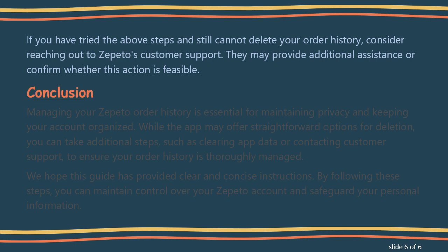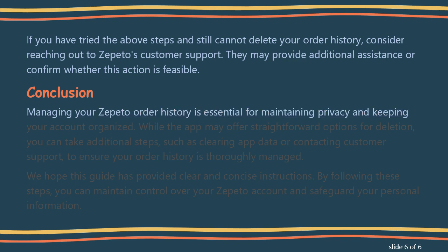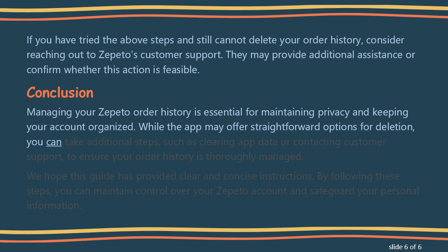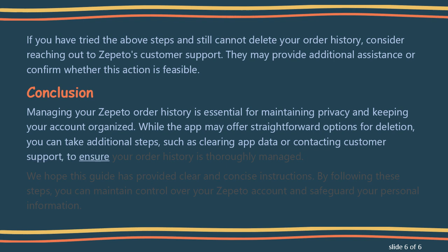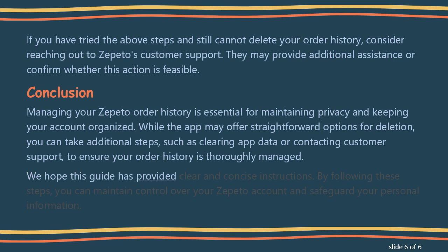Conclusion. Managing your Zepetto order history is essential for maintaining privacy and keeping your account organized. While the app may offer straightforward options for deletion, you can take additional steps, such as clearing app data or contacting customer support, to ensure your order history is thoroughly managed. We hope this guide has provided clear and concise instructions. By following these steps, you can maintain control over your Zepetto account and safeguard your personal information.